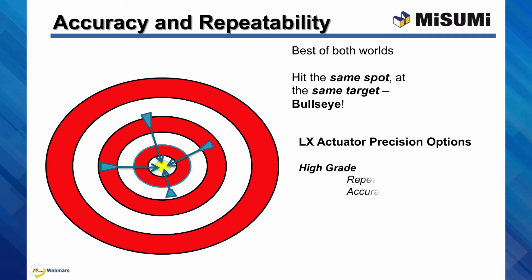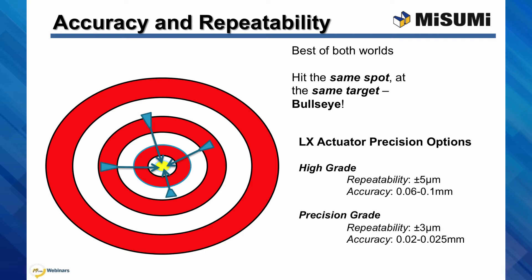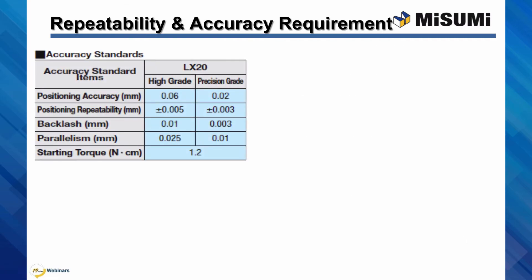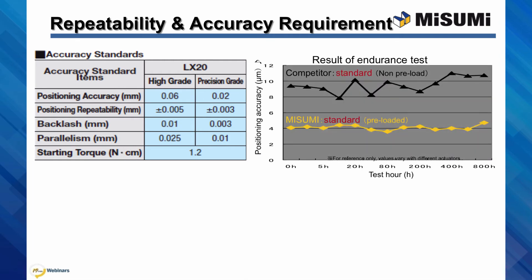Combining both accuracy and repeatability is the best possible scenario and is like hitting the bullseye every time. Misumi's LX actuators have two precision options available: high grade and precision grade, both of which provide excellent accuracy and repeatability. Both grades have preloaded bearings on the side carriage and the ball screw. This preload limits the backlash, pitch, and roll, and improves the overall precision of the actuators. The high grade provides plus or minus 5 microns repeatability and an accuracy of 0.06 to 0.1 millimeters depending on actuator size. The precision grade provides plus or minus 3 microns repeatability and an accuracy of 0.02 to 0.025 millimeters depending on actuator size. The precision grade actuators are select actuators given an additional level of inspection and testing to ensure they meet these rigid specifications. Not only does Misumi's LX actuator line provide great accuracy and repeatability specs, but the quality is tried and true, consistently beating out competitors' equivalent actuators in 800-hour full load endurance tests.